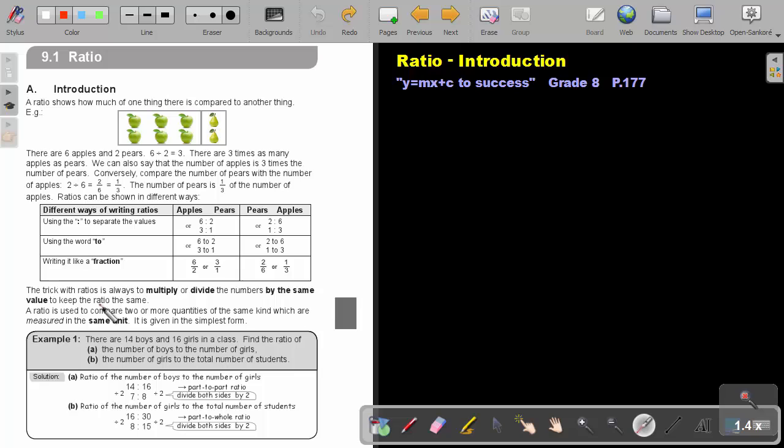The trick of ratio is always to multiply or divide the numbers by the same value to keep the ratio the same. This is very, very important. So it can only be multiplied or divided by the same number, not add or subtract. A ratio is used to compare two or more quantities of the same kind, which are measured in the same unit. It is given in the simplest form. So very important also, it must be measured in the same unit.